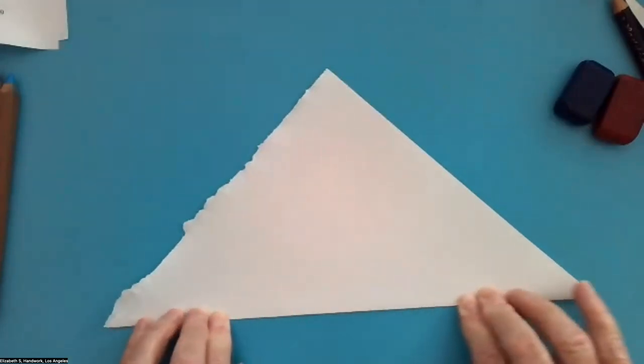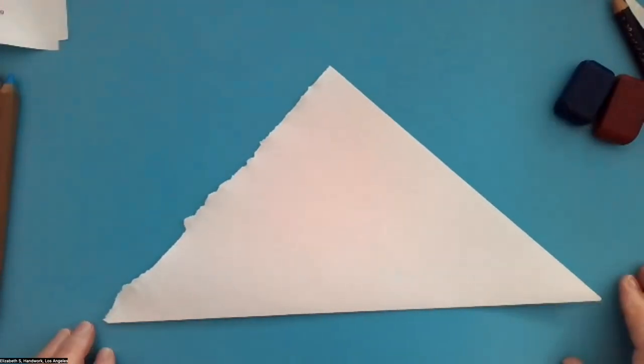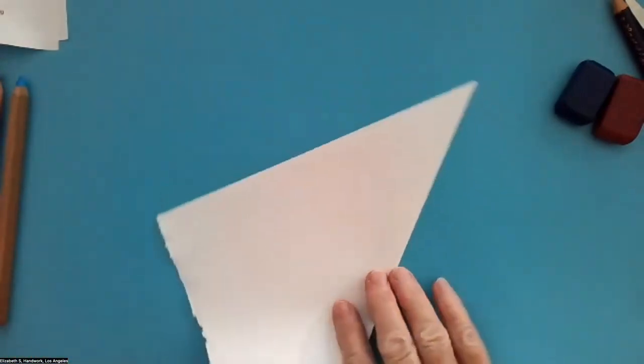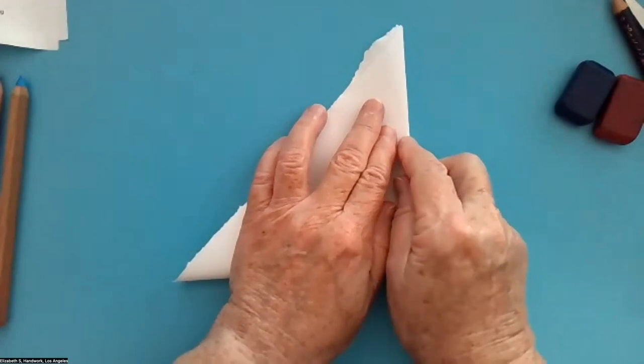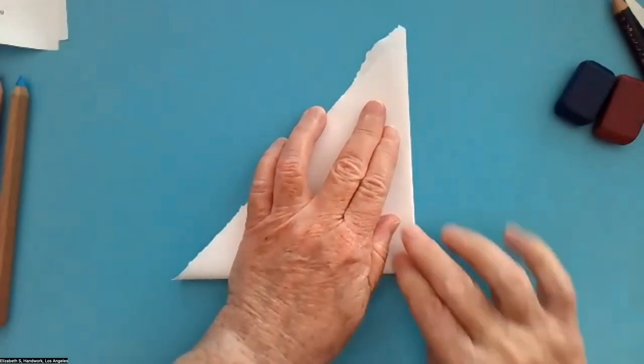So now you have a triangle. We're going to fold it again and make a smaller triangle, half size, like this.